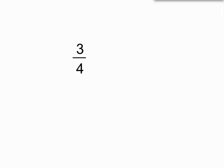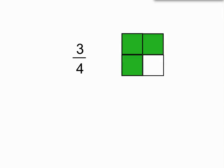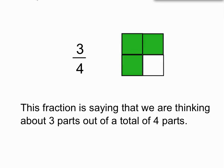So what is the idea of a fraction? Well, a fraction like 3 quarters means we're really considering four equal parts and thinking about three of them. As you can see on the shaded diagram here, we've shaded three out of the four parts and they're all equal parts. So the green shading is taking up three quarters of the overall square.